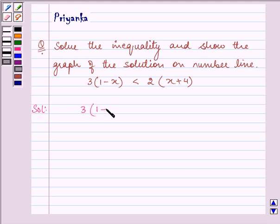3 bracket 1 minus x bracket close is less than 2 bracket x plus 4 bracket close. Now what we need to do? Exactly, we need to first remove the brackets. So we have 3 minus 3x is less than 2x plus 8.